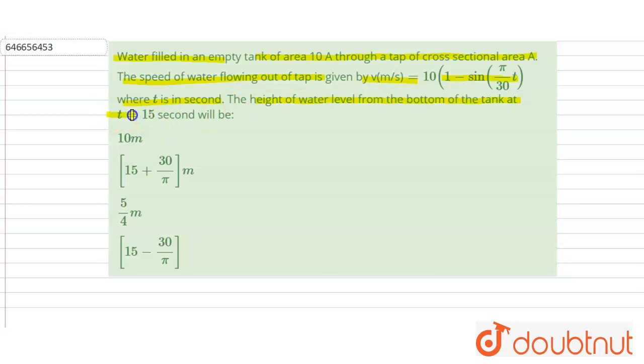So in the question it is given this is tank of area 10A, and there is a tap of area A, and volume is velocity is v, and due to this tap the tank is filled with water.